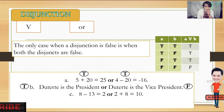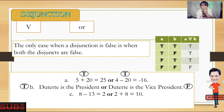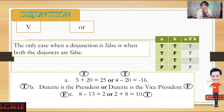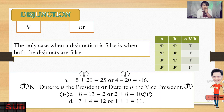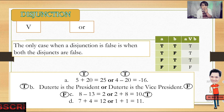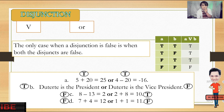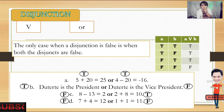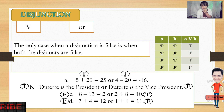'8 minus 13 is equal to 2 or 2 plus 8 is equal to 10.' The first disjunct is false while the second is true, but the truth value is still true. Then: '7 plus 4 is equal to 12 or 1 plus 1 is equal to 11.' Both disjuncts are false — no other choice, so the answer is false. That is the disjunction.